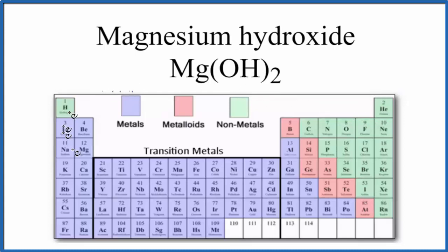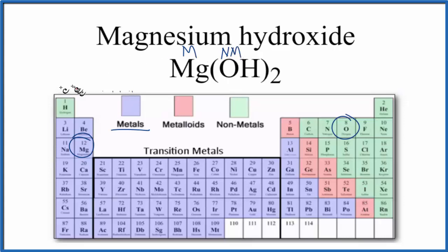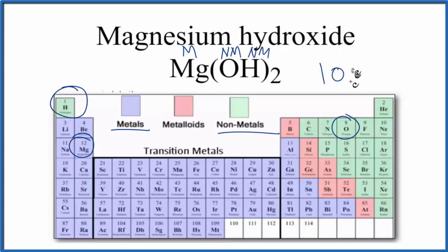So when we look at the periodic table, we have magnesium here. Magnesium is a metal. So we have a metal, and then oxygen, that's a non-metal. And then hydrogen, that's over here, that's also a non-metal. So when we have metal and non-metals, that's going to be an ionic compound.